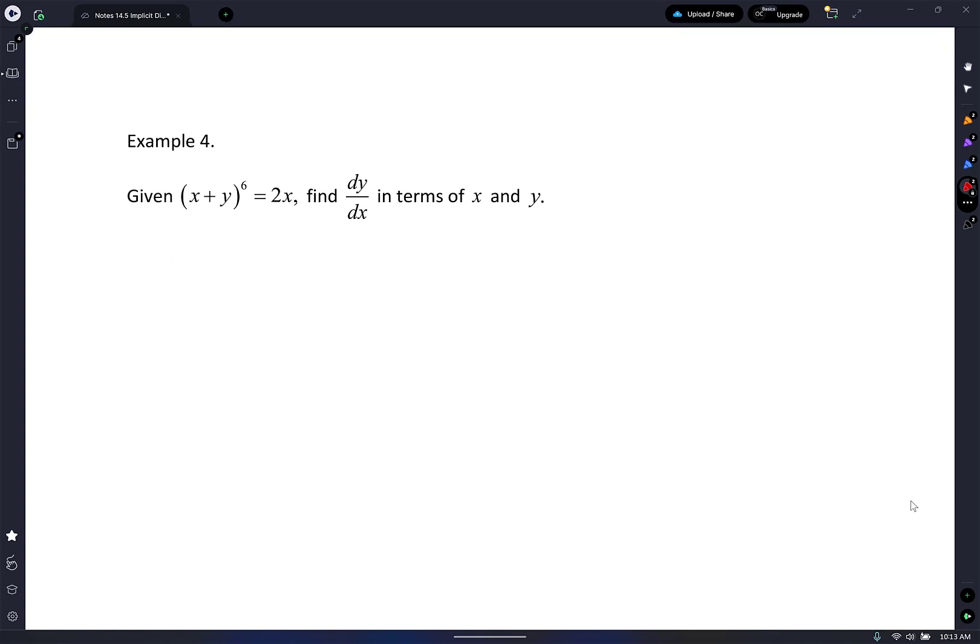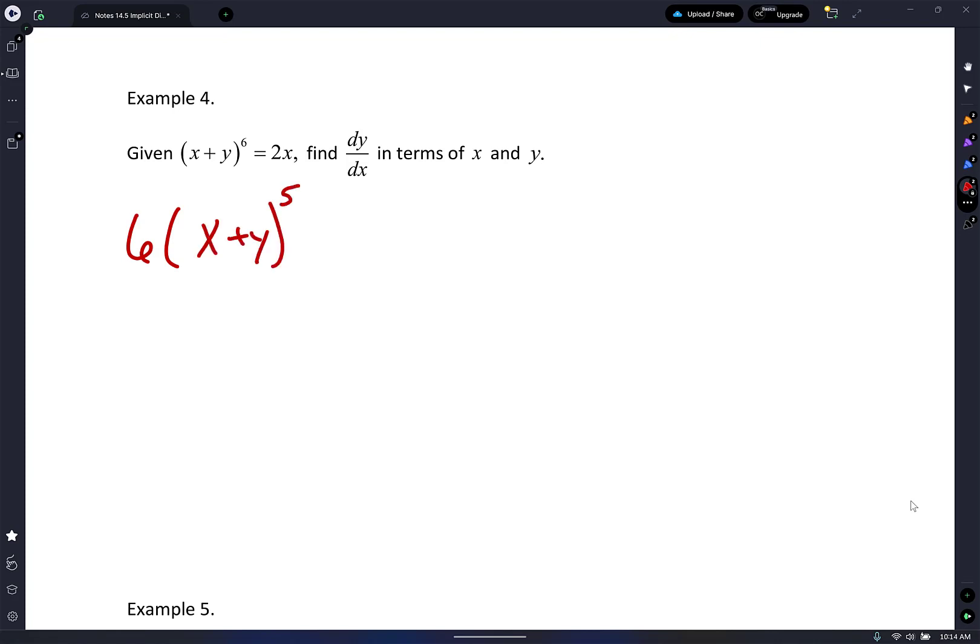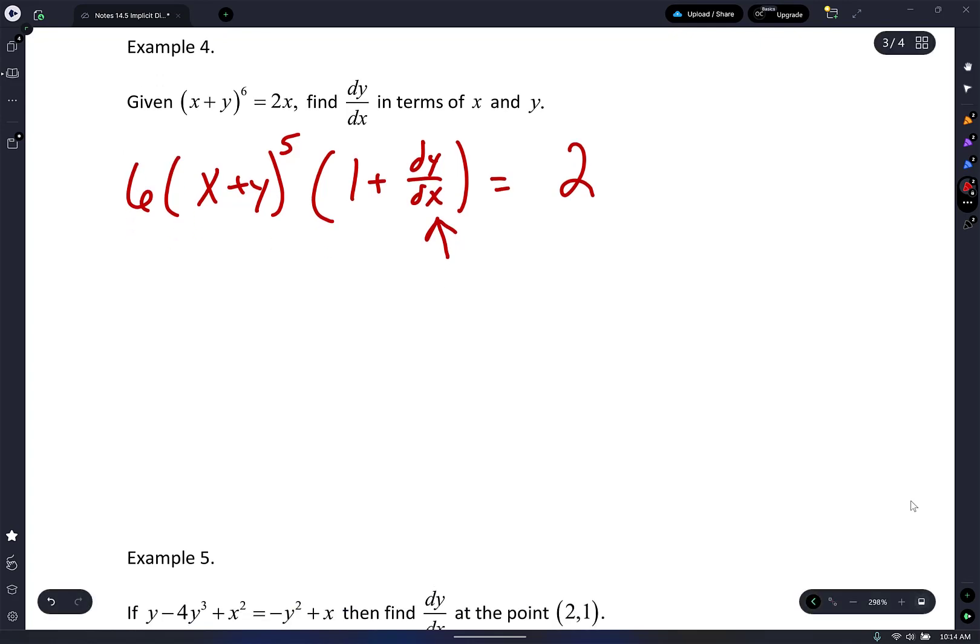Find dy/dx in terms of x and y. Given (x + y)^6 equals 2x. We're just doing chain rule. I bring the 6 to the front, leave the x plus y alone, power of 5. Am I done? No. Times derivative of the inside: 1 plus dy/dx. Perfect. All that equals 2. This is a product and I could expand x plus y but I'm not because it's to the power of 5. So I'm going to divide by 6(x + y)^5.